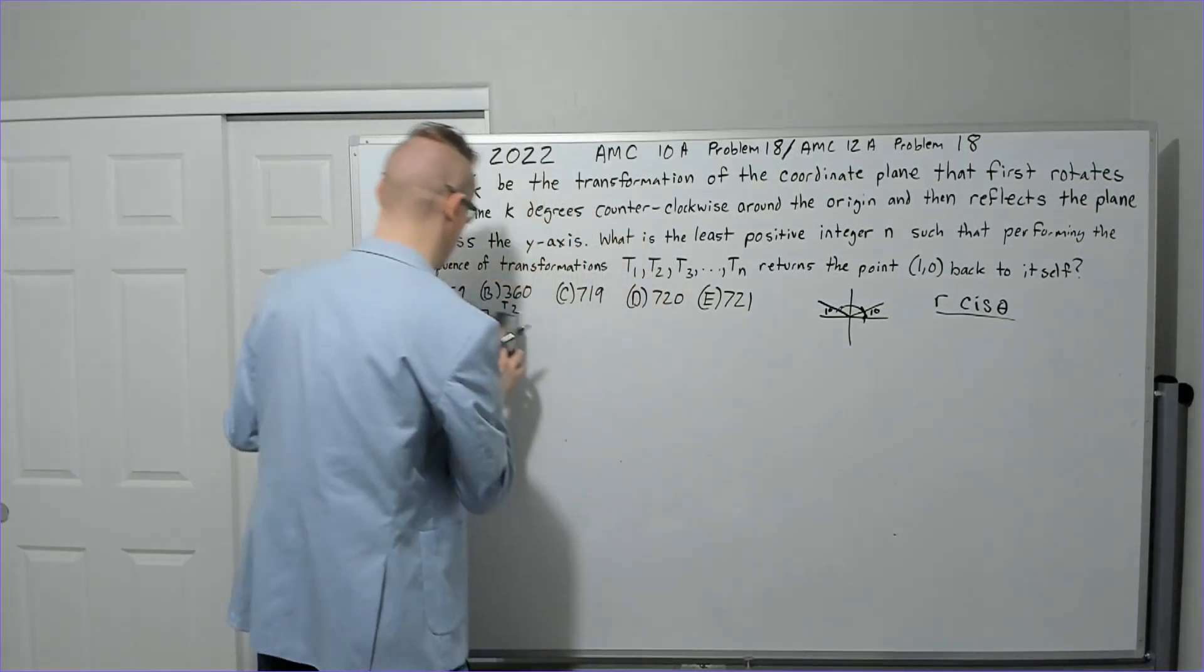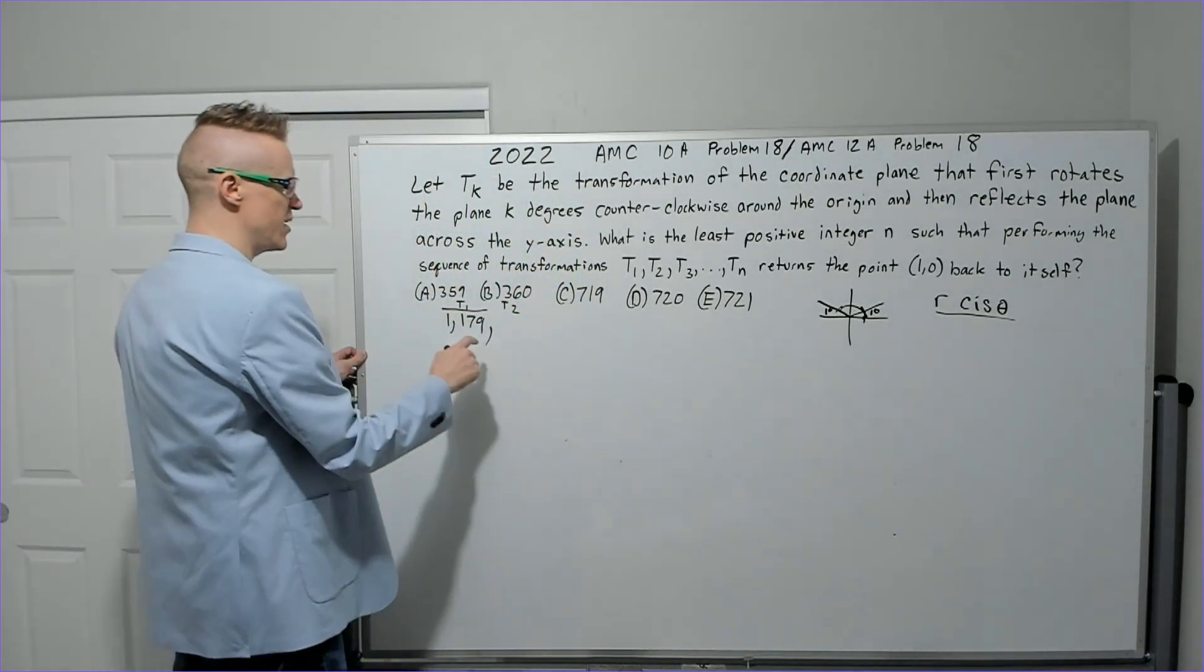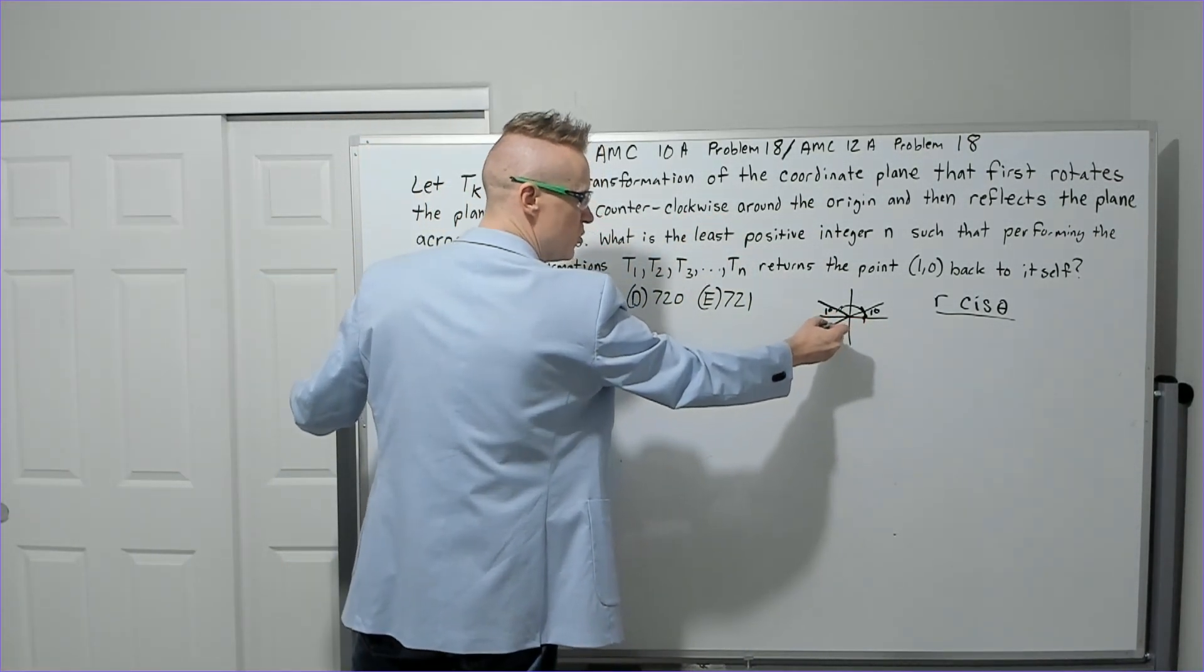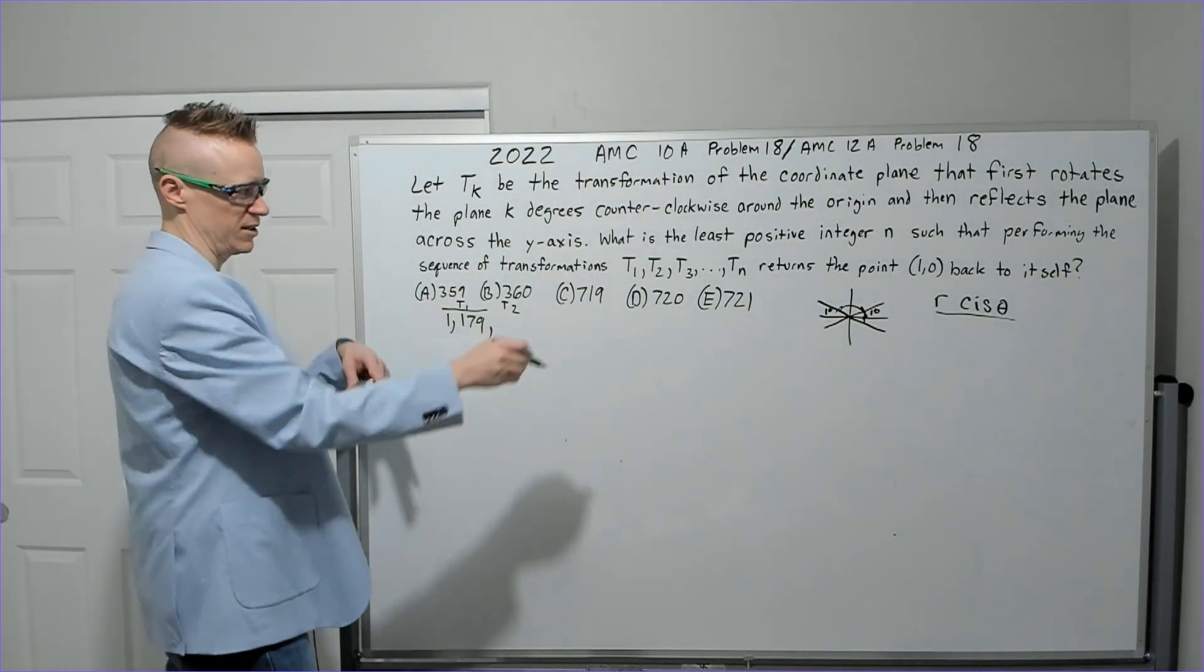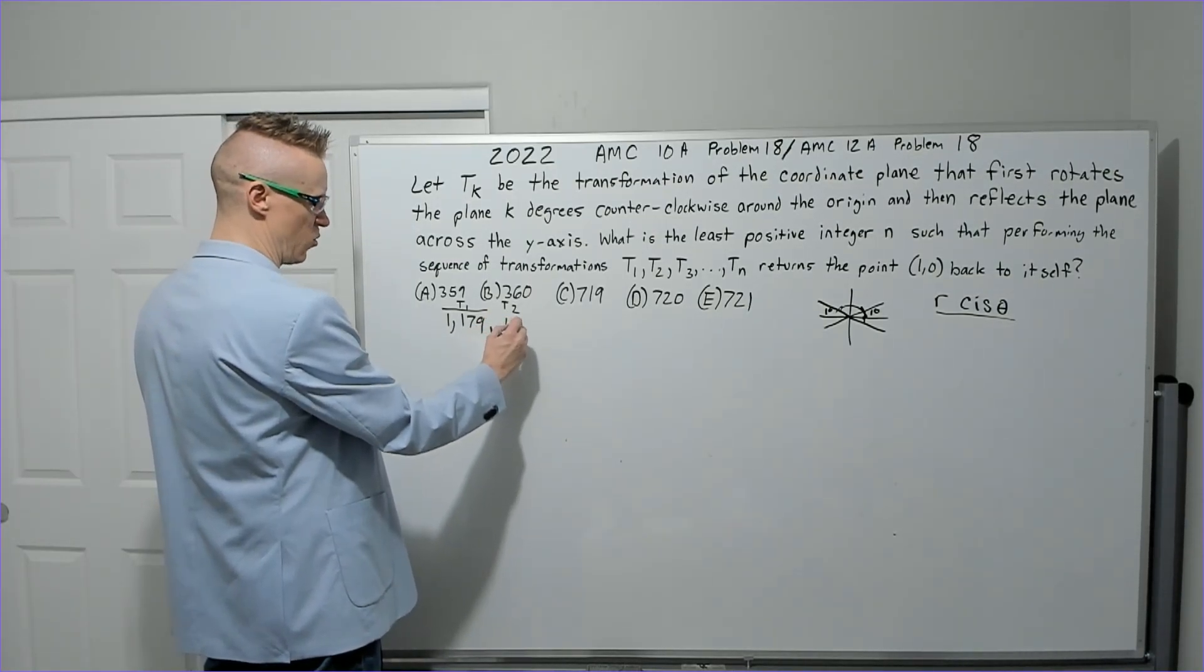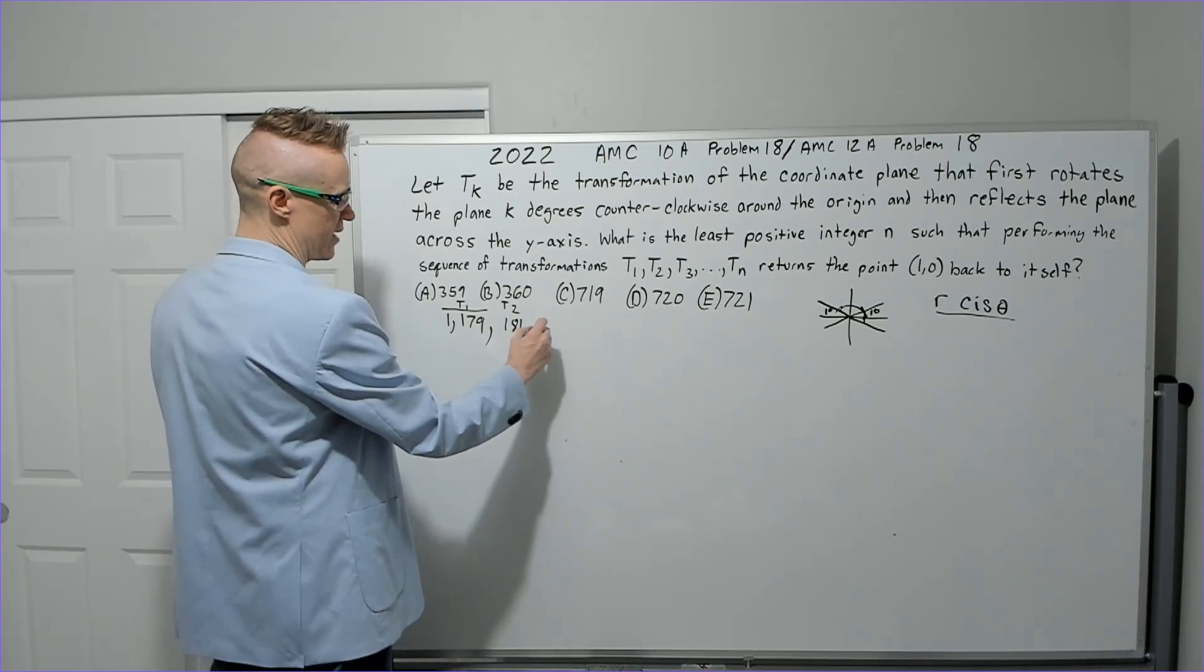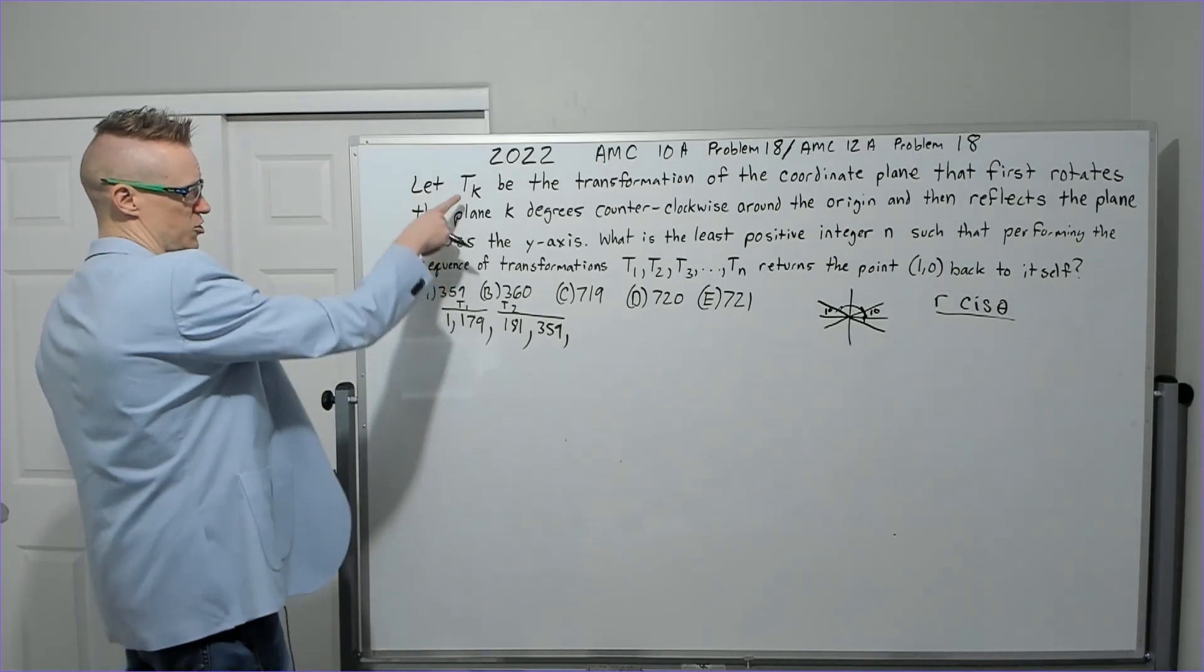Now you'll do transformation two. You're located here. What's the first thing you do? You rotate two degrees counterclockwise, which will put you one below, and then you'll flip over here. So where will you be? You added two, you're at 181, then you're going to flip all the way over to the other side and you'll be at 359. That's transformation two.